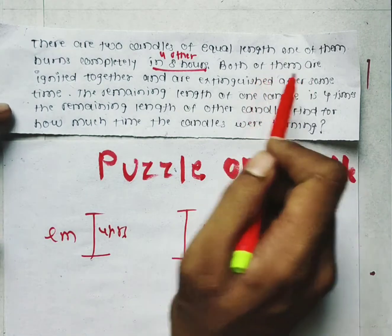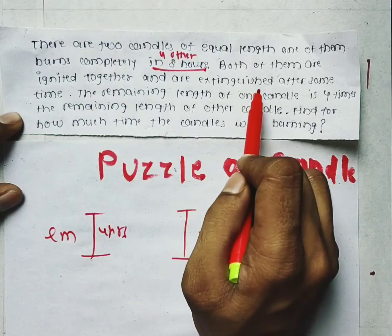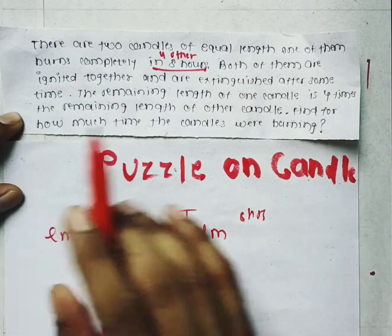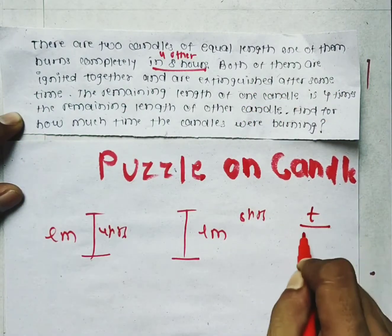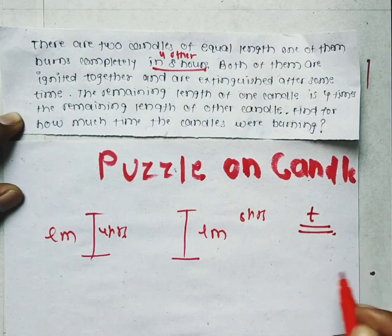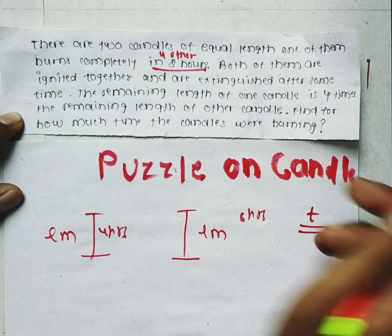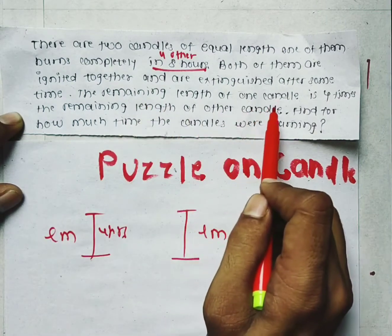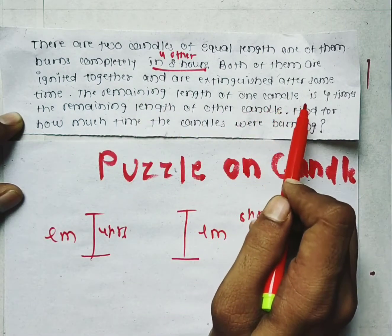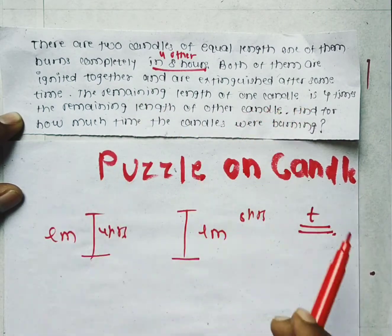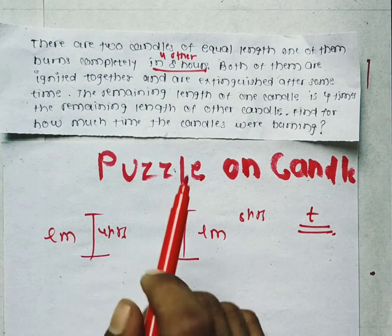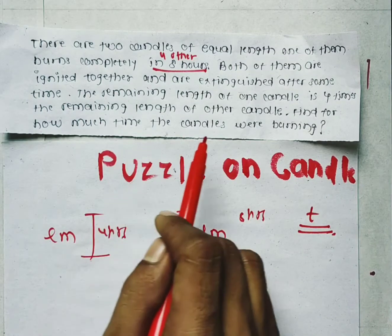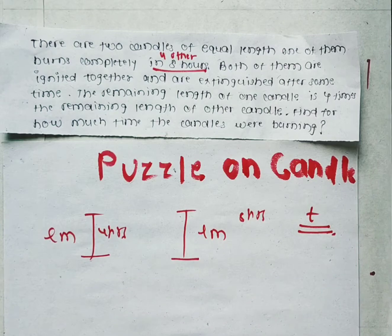Both of them are ignited together and are extinguished after some time, but we don't know when they are extinguished. Let's say they are extinguished after T time. The remaining length of one candle is 4 times the remaining length of the other candle, and we have to find out for how much time the candles were burning.